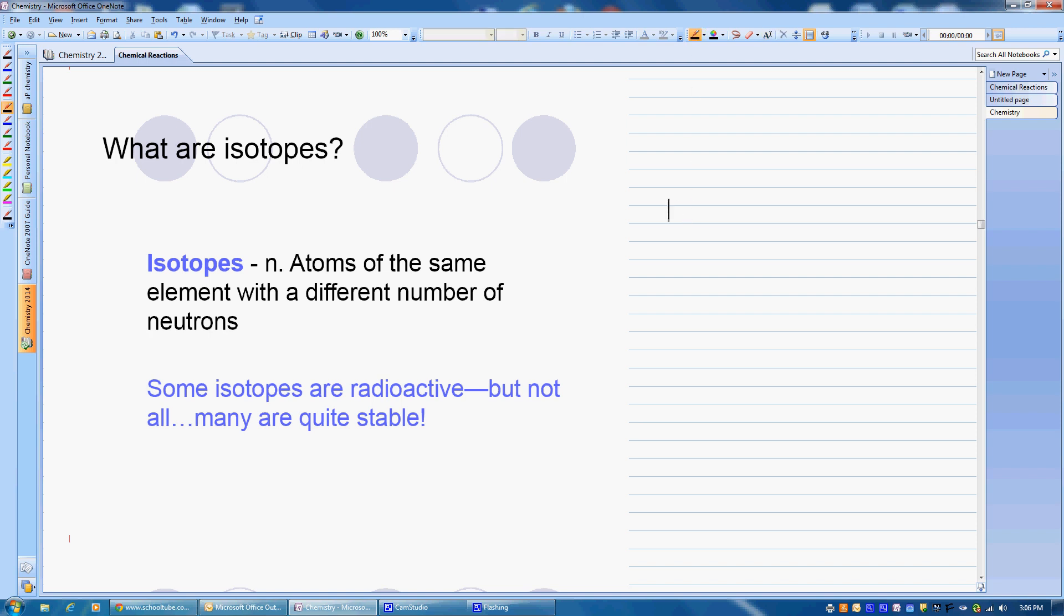So if we have hydrogen, for example, and we have hydrogen isotopes, we know that their atomic number is going to be 1. But if they have different number of neutrons, that means they have different masses. So we might have a hydrogen that has a mass of 1, hydrogen that has a mass of 2.